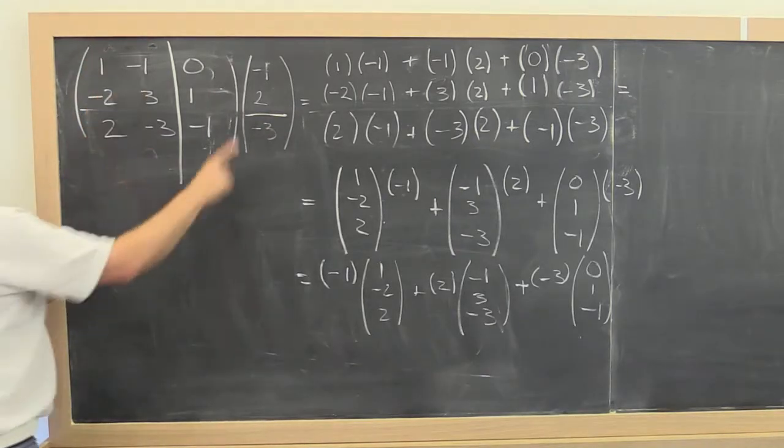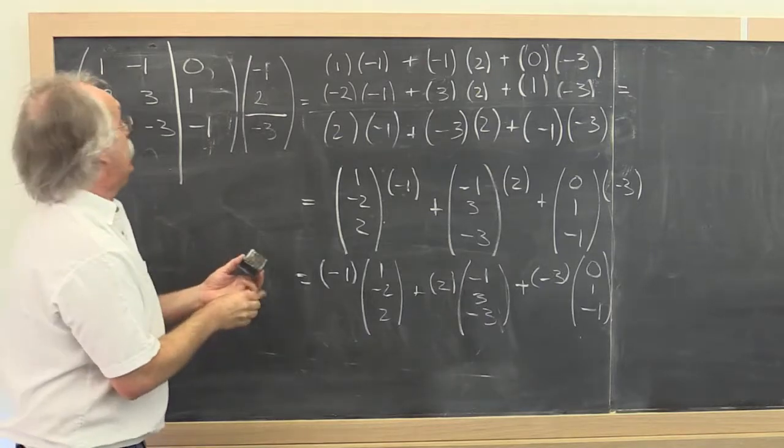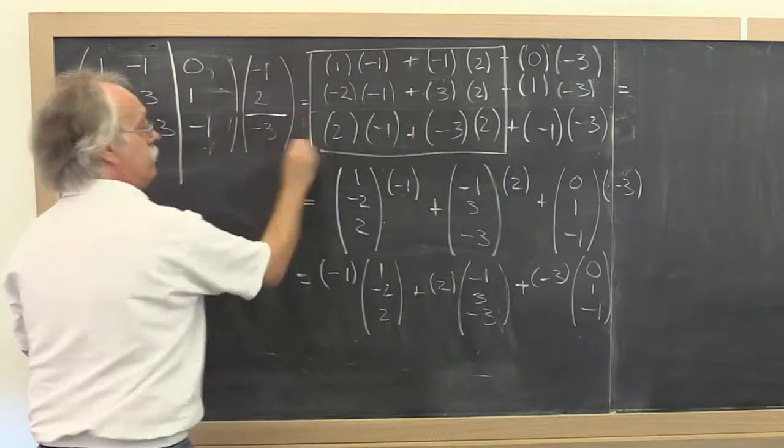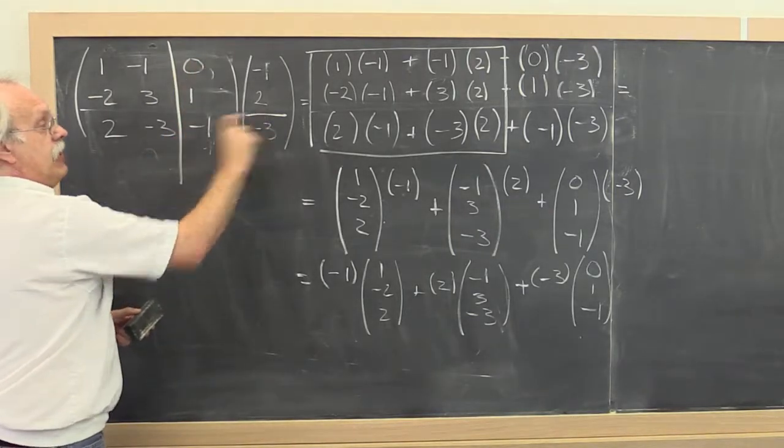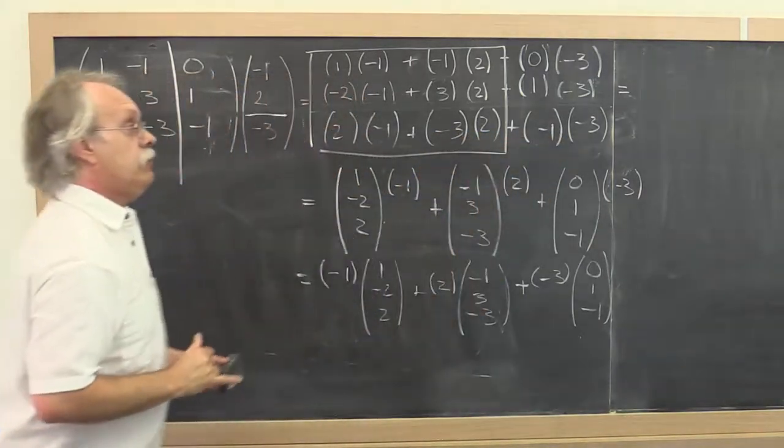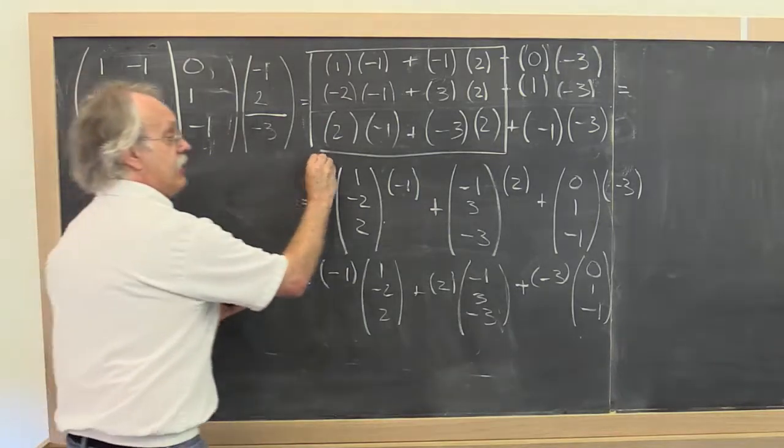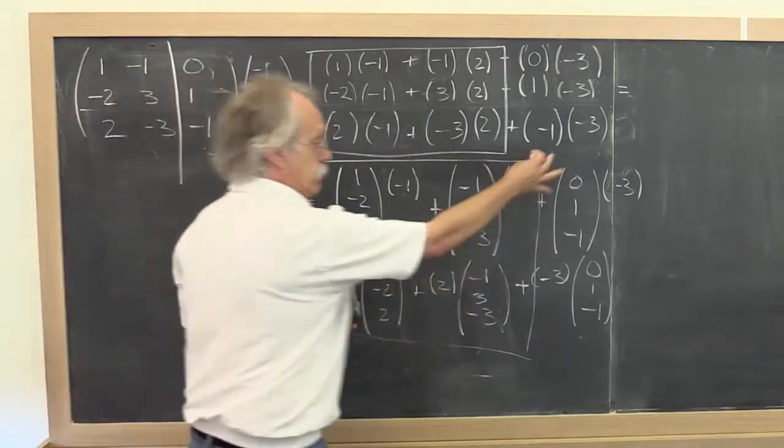The left matrix times this first part of the vector is exactly this computation right here. And then the right part of the matrix times the last part of the vector is exactly the computation that still remains. Okay? Or you can think of that as this is the first part and this is what remains.